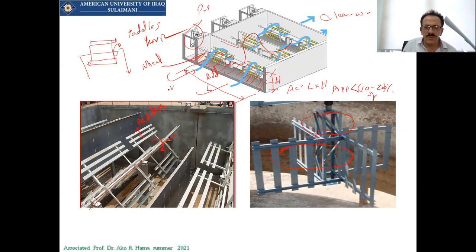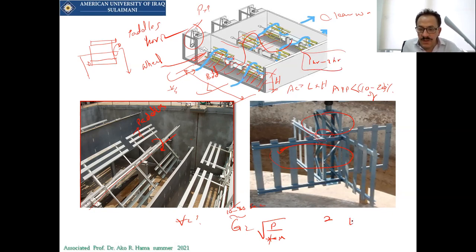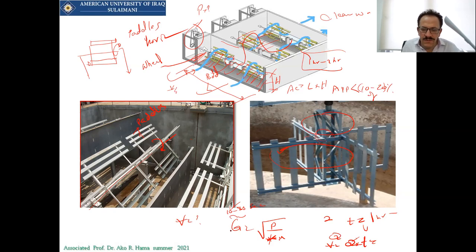The water will stay for one to two hours in this tank, so I have the time T = one hour. Volume equals Q times T. After having the volume, I substitute G (10 to 80) to find P — the power needed to rotate the paddles. The power per paddle depends on the area of the paddles, the distance between paddles, the thickness, the width, the diameter of rotation, and the velocity of the paddles in RPM.